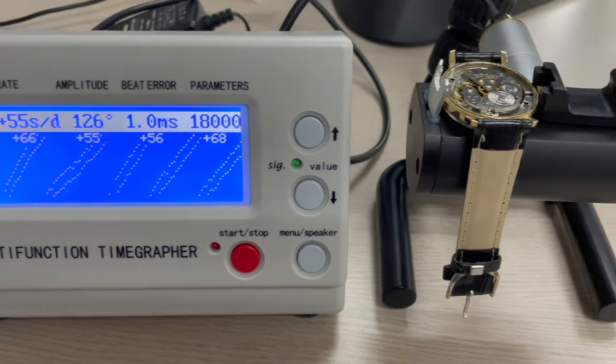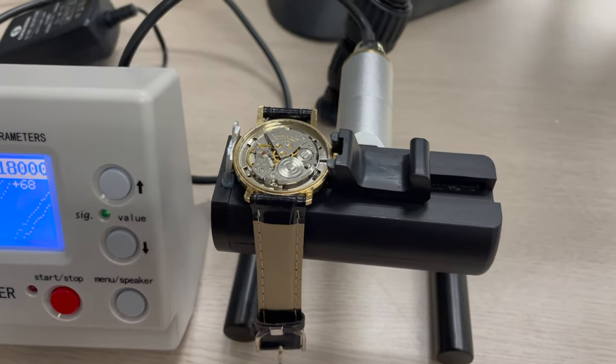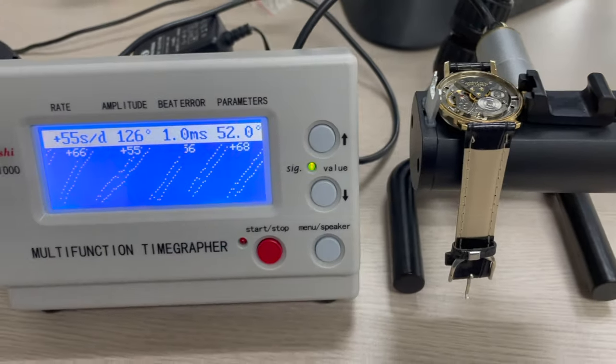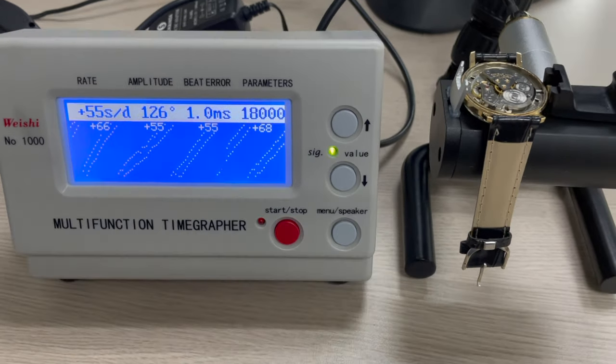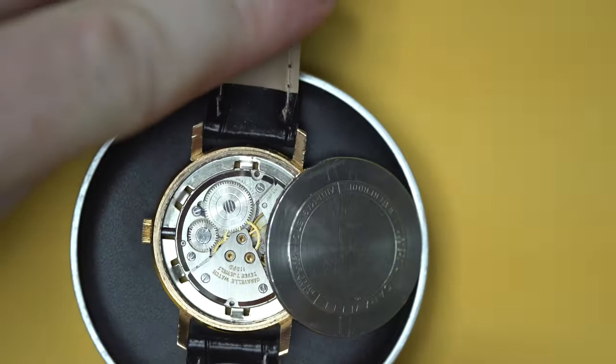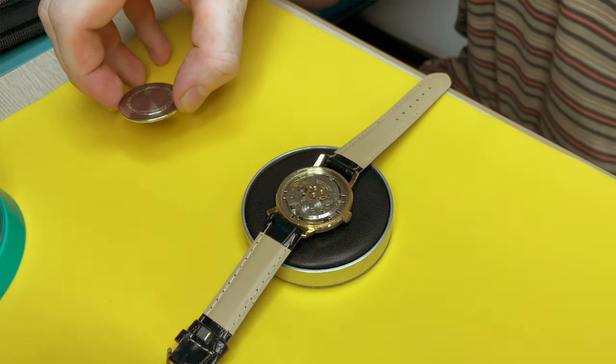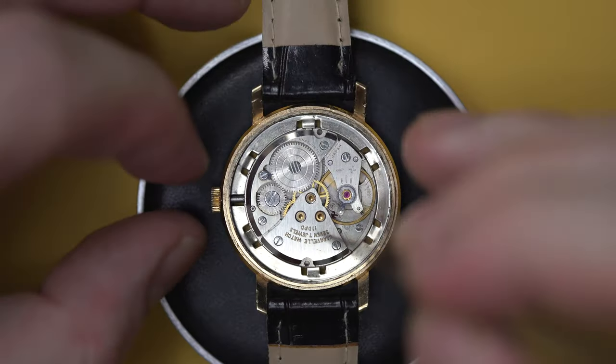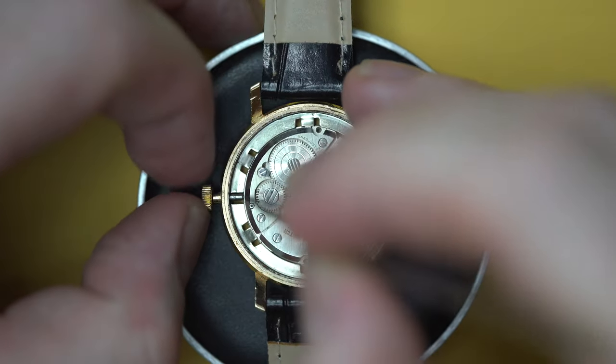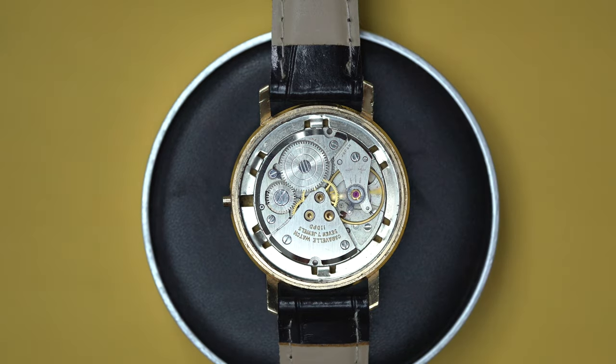Once put on the time grapher, this watch from the 70s is not running the greatest to be honest. So let's see what we can do about that. Maybe it's just old, maybe it just needs a service. We're going to take the movement out of the case and dismantle this thing. See if there's anything wrong with it or if it's just gunked up with some old grease and oil.